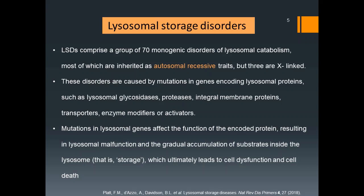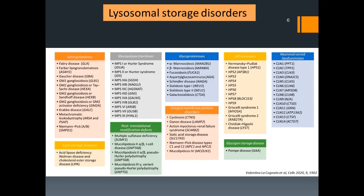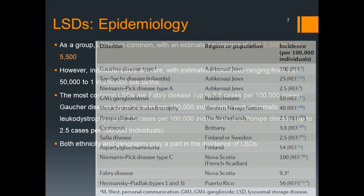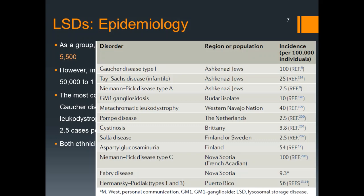Lysosomal storage disorders have been broadly categorized into various subgroups comprising sphingolipidosis, lipid storage diseases, mucopolysaccharidosis, post-translational modification defects, glycoproteinoses, integral membrane protein disorders, and others. As a group, they are relatively common with an incidence of 1 in 5,000 to 1 in 5,500. However, individual lysosomal storage disorders are rare, with incidence ranging from 1 in 50,000 to 1 in 250,000 live births.